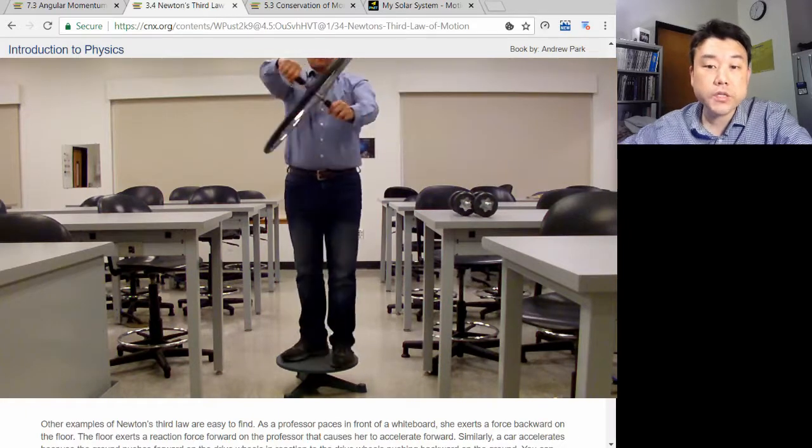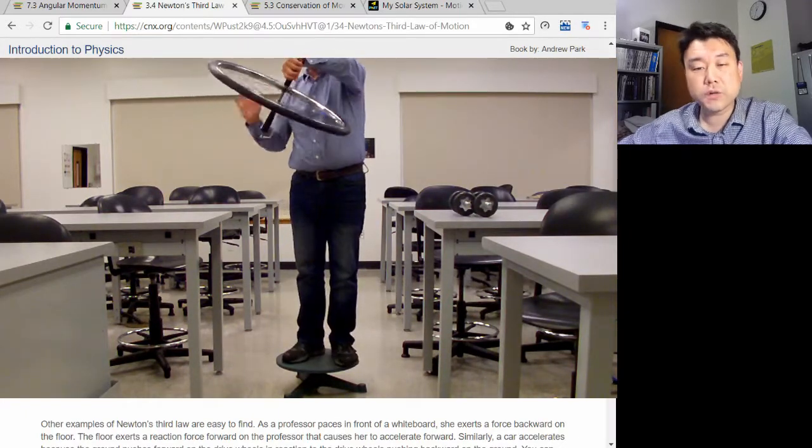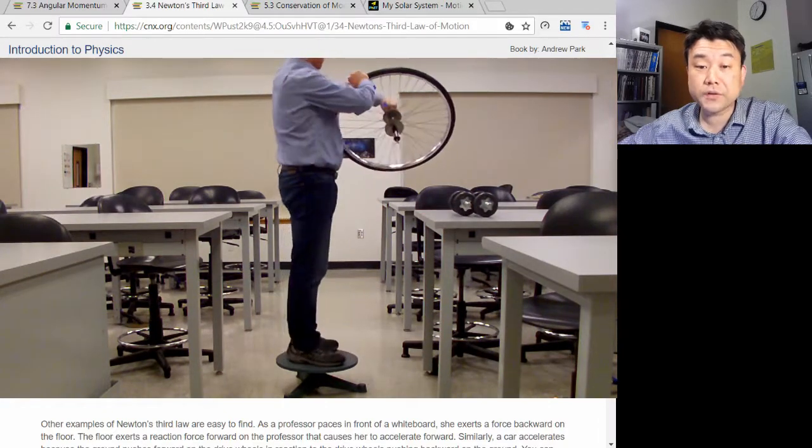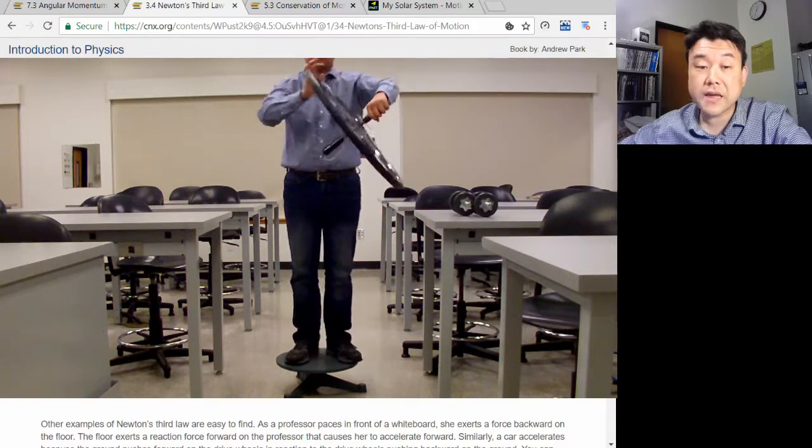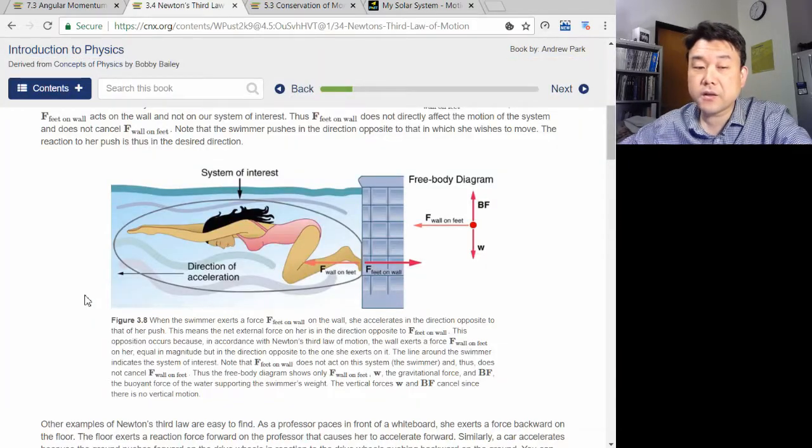If you consider the system of me and the wheel, the total angular momentum is conserved. I am spinning clockwise fast enough to balance out the wheel's counterclockwise angular momentum and some more. And this is because there is no net external torque on the system.